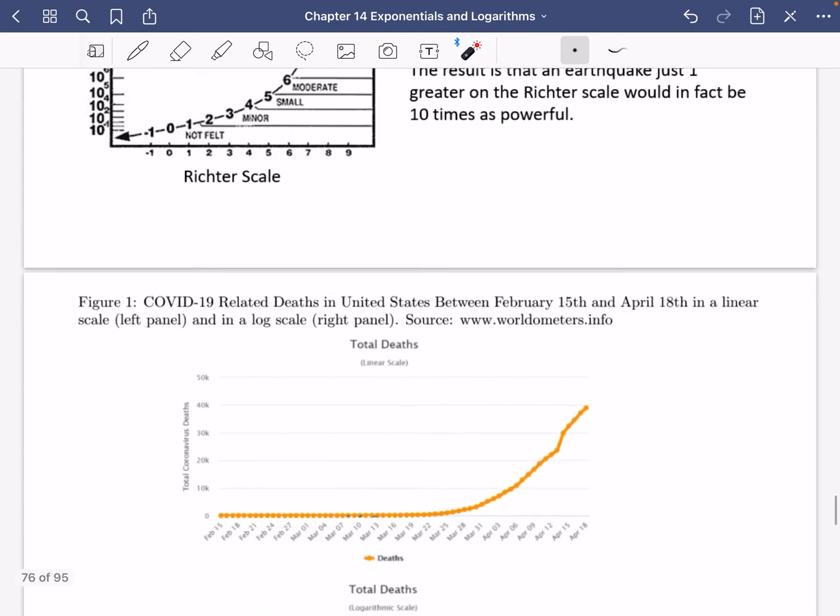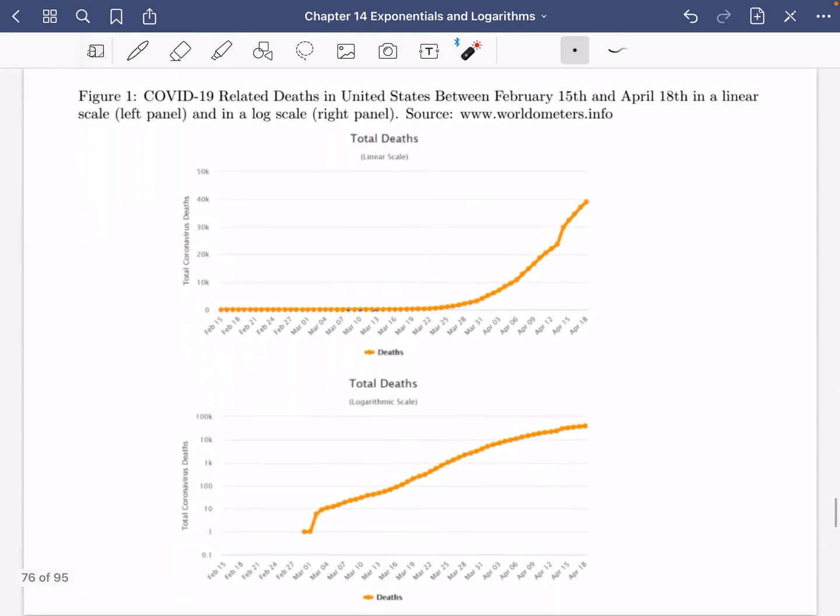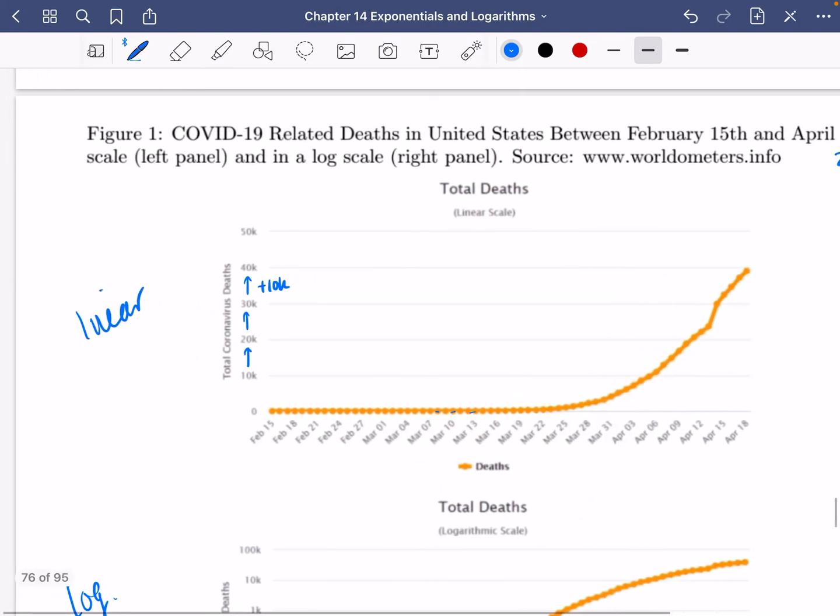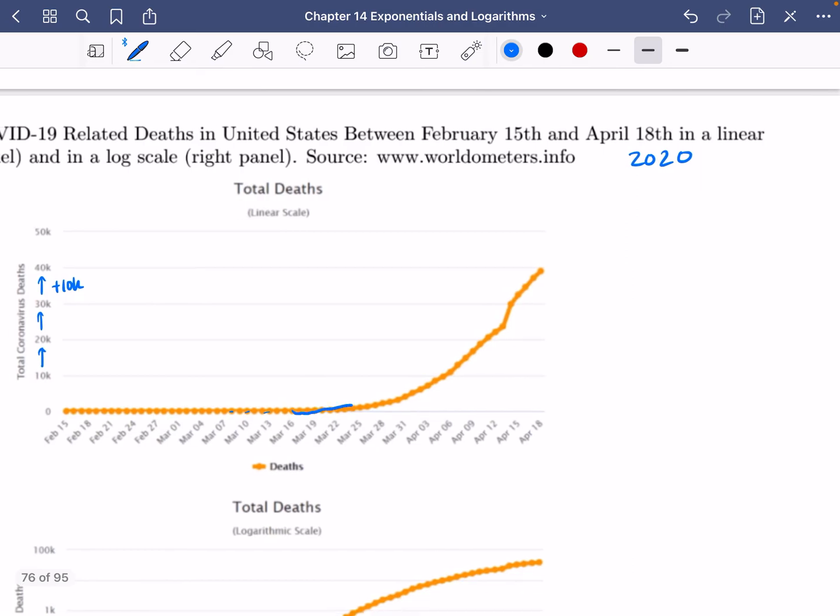So let's see where else this might be applied. Now, I mentioned earlier on about the exponential growth that we've seen with COVID figures. So these two figures that we've got here, they are the COVID-19 related deaths in the US between 15th of February and 18th of April, 2020. And this one here is the linear and not on the left, but on the top. And then this one down here is the logarithmic one. Now, we can tell that this one is linear because each time that we move up this scale on the left-hand side, it's going up by 10,000. We can also see that we've got this kind of exponential growth here. We've got this kind of growth of the exponential part of the curve there.